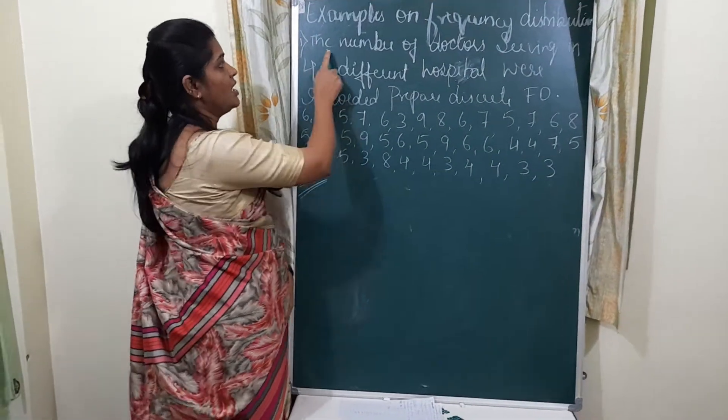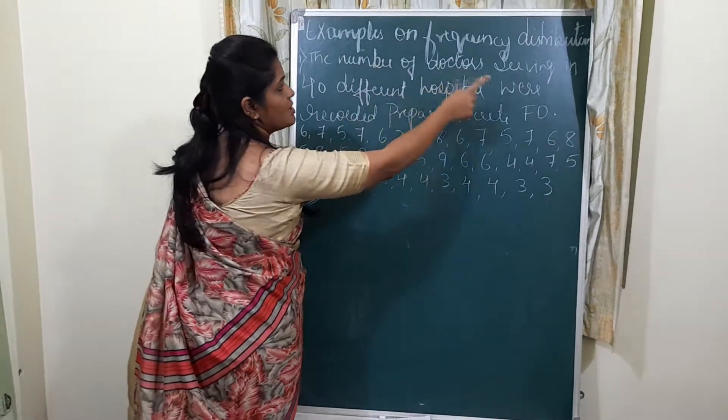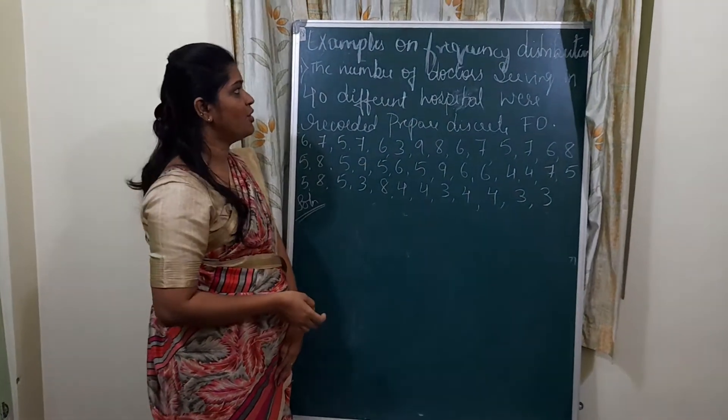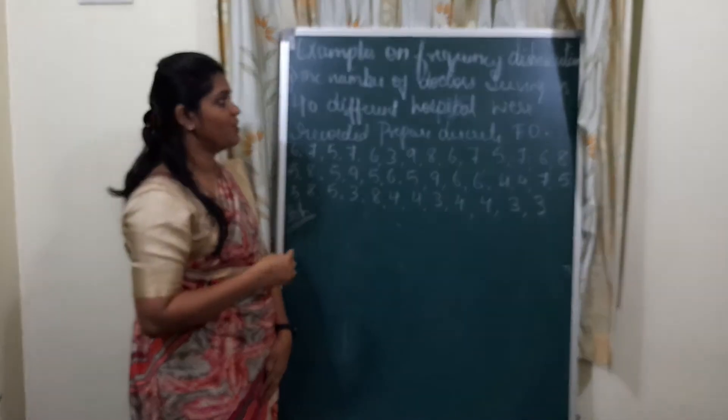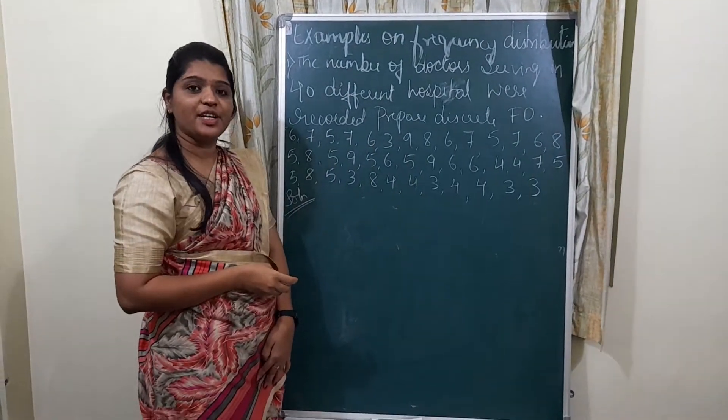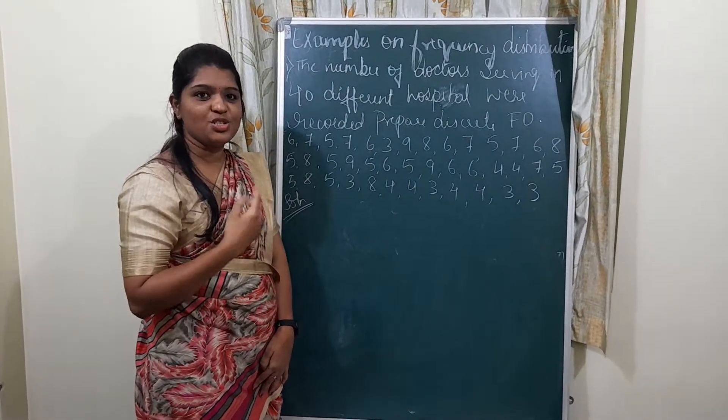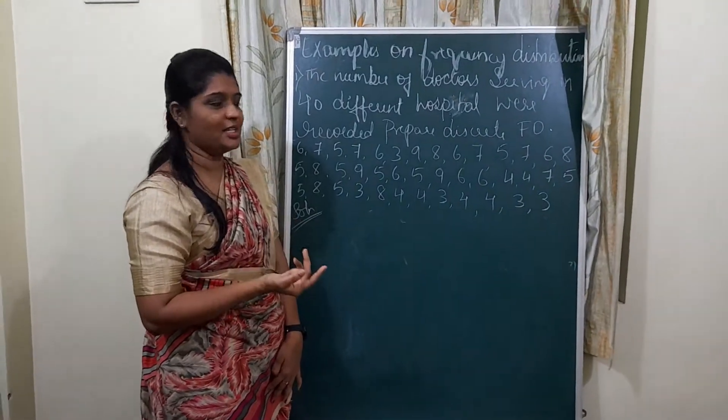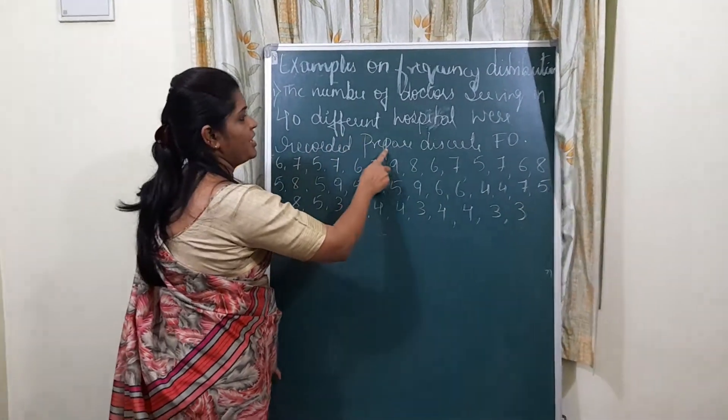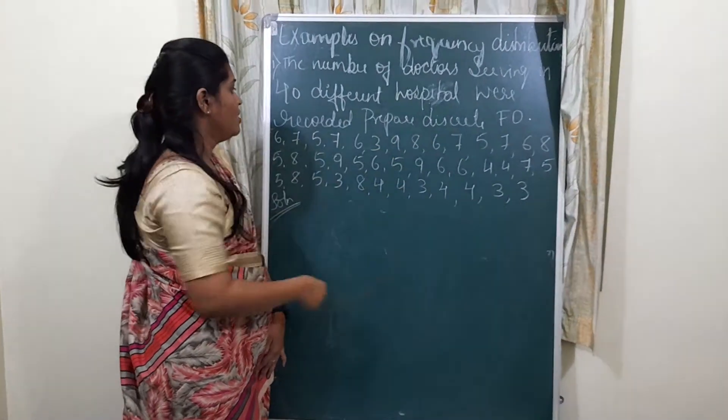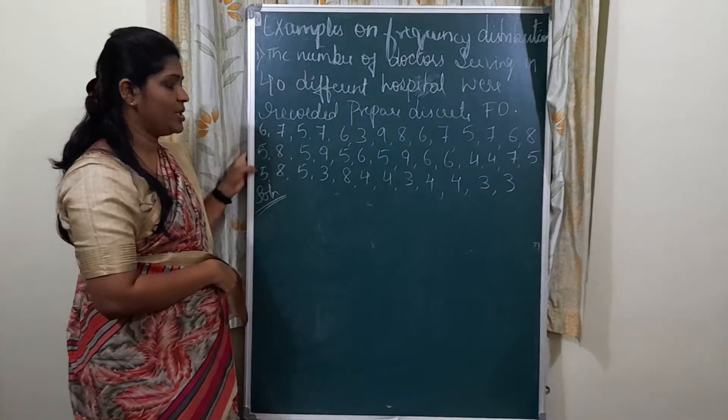Here the first question is the number of doctors serving in 40 different hospitals. This is the number of doctors serving in 40 different hospitals. This is the frequency distribution. This is the question - this is 40 observations.